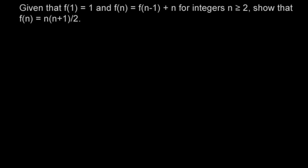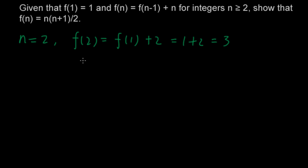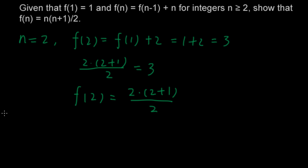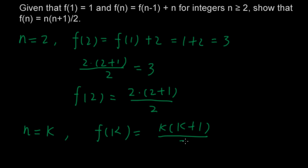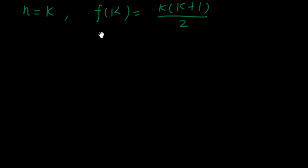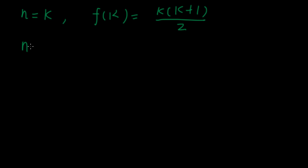Solution 3 is by mathematical induction. Because we have a recursive formula for this sequence, it is natural to use induction. We first show the formula is true for n equals 2: f(2) equals f(1) plus 2 equals 3, and 2 times (2+1) over 2 is also 3, so the formula holds for n equals 2. Now we assume the formula holds for n equals k, so f(k) equals k times (k+1) over 2.